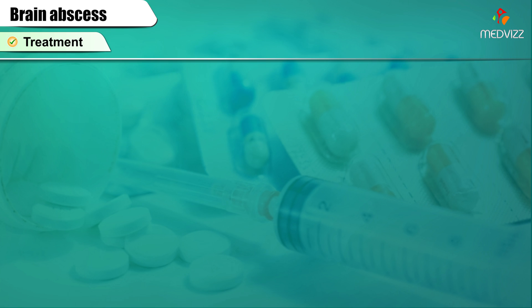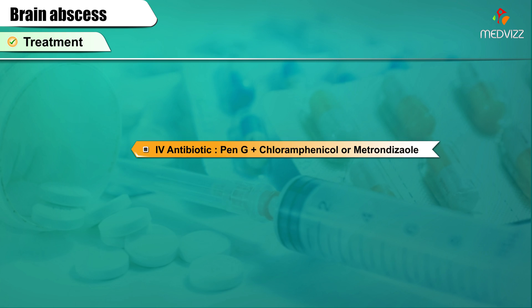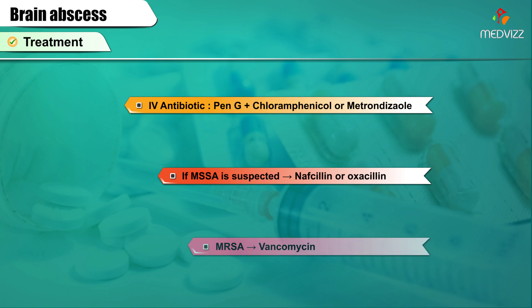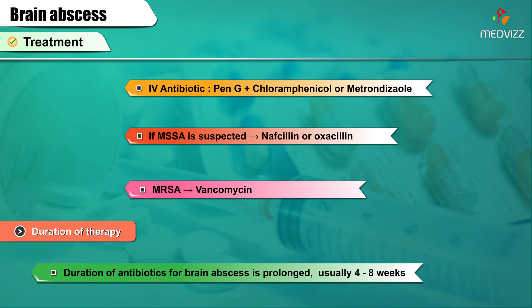Treatment - IV Antibiotics: Penicillin G plus Chloramphenicol or Metronidazole. If methicillin-sensitive Staphylococcus aureus (MSSA) is suspected, use Nafcillin or Oxacillin. If MRSA (methicillin-resistant Staphylococcus aureus) is suspected, Vancomycin can be used. The duration of antibiotics for brain abscess is prolonged, usually 4-8 weeks.